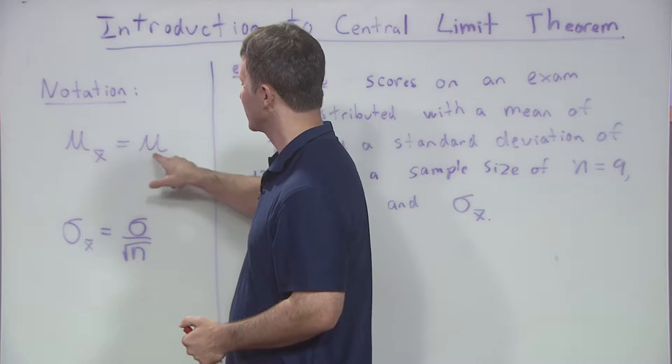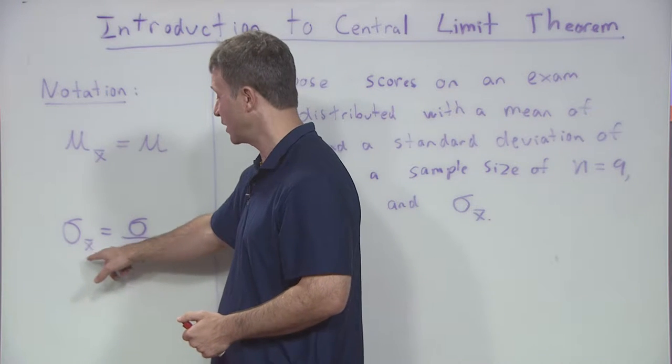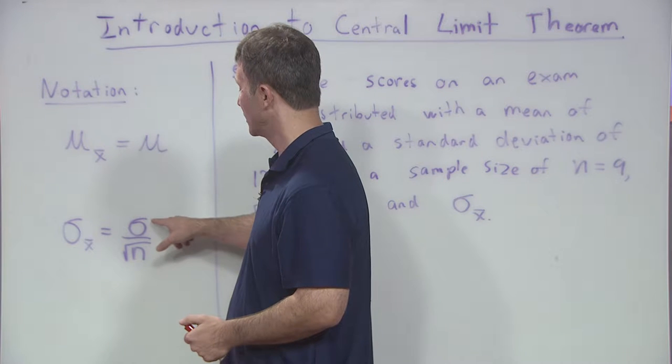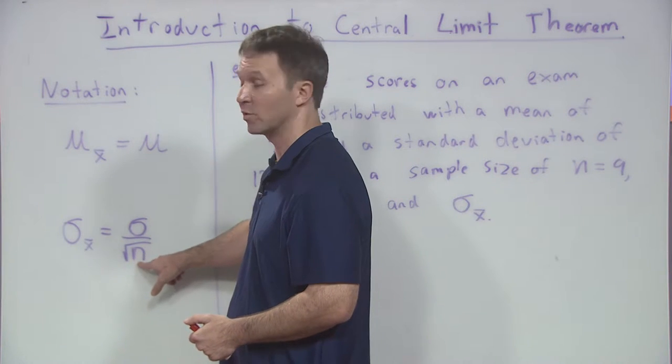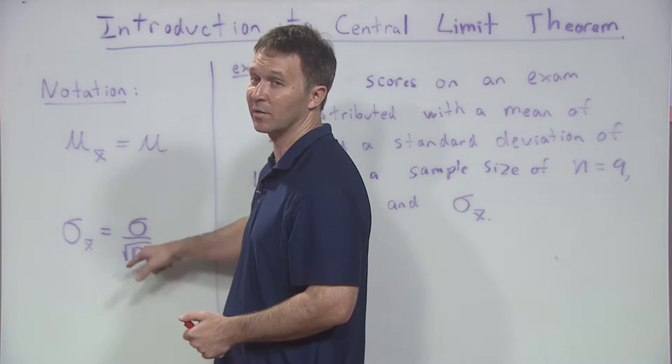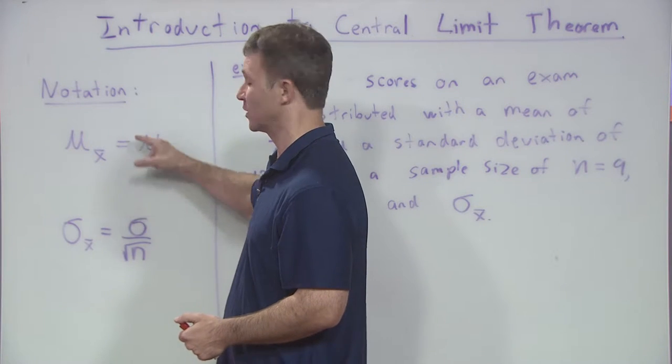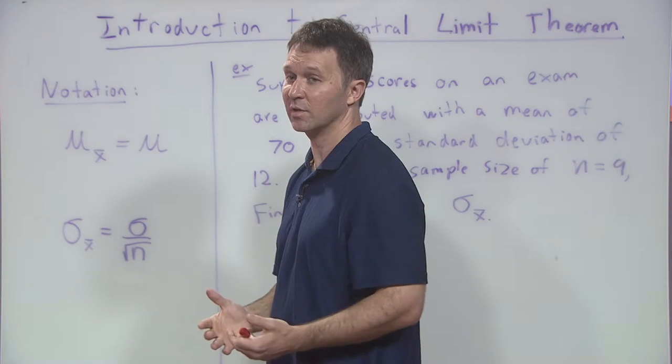Remember, the mean of the means is equal to the original mean, and the standard deviation of the means is the original standard deviation divided by the square root of n. These are key points you need to memorize for central limit theorem problems. And this is just a very brief introductory problem.